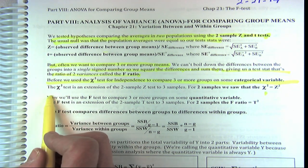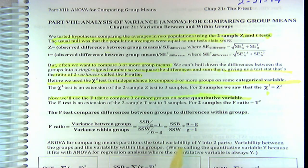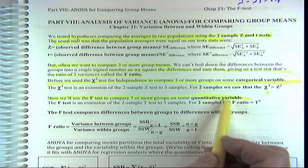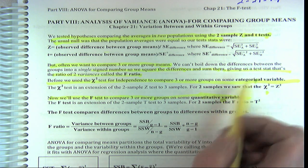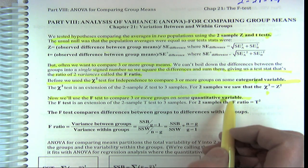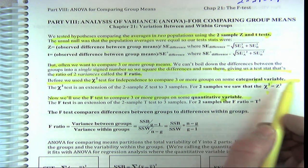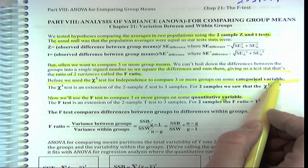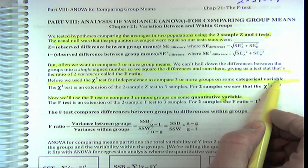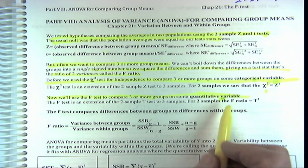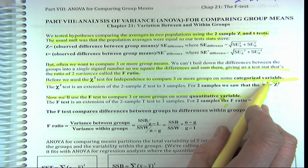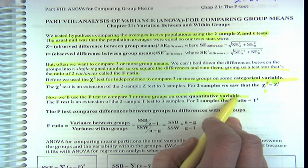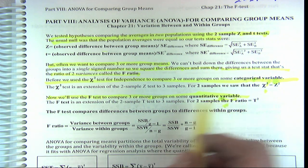The chi-squared distribution for just two groups is z-squared. Now we're going to use the F to compare three or more groups on some quantitative variable — one you answer with a number. If I asked you whether you'd ever fallen asleep in class and you answer yes or no, that's categorical. If I asked how many times, that's quantitative, and you'd use the F ratio because you're comparing group means, not counts.